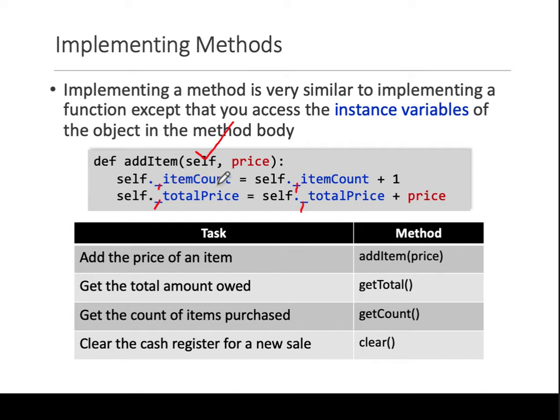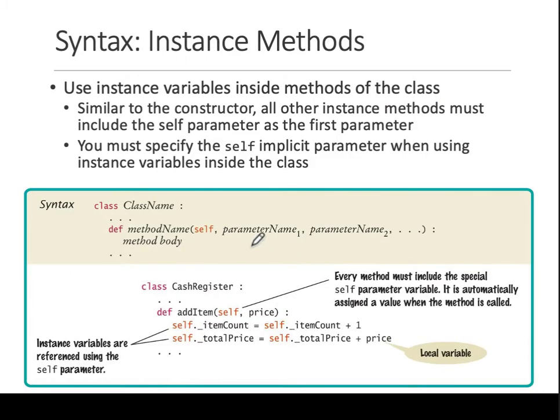The function can do whatever it wants. So the syntax, again inside the class: def keyword, method name, self is required first, then any parameters, and then the method body.